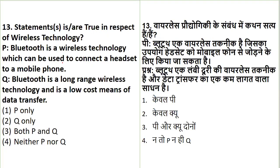The next question is in the form of statements about Bluetooth. Statement P: Bluetooth is a wireless technology which can be used to connect a headset to a mobile phone. Statement Q: Bluetooth is a long-range wireless technology and a low-cost means of data transfer. Looking at both statements — P is true; Bluetooth is indeed a wireless technology used to connect devices like headsets to mobile phones. However, Q is partially false — Bluetooth is not a long-range technology; its range is very short. So only statement P is correct.